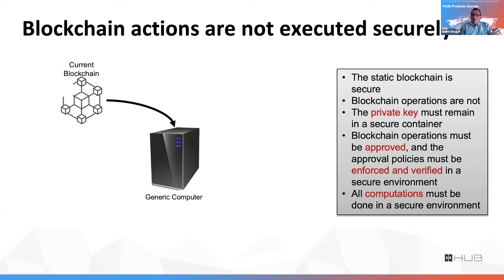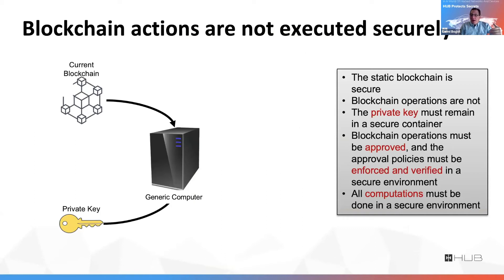Now, blockchain itself — this is one thing we need to point out — as a static piece of data is secure. There's no problem with the public blockchain and the security of a static blockchain. The issue is getting things onto the blockchain. Every time I do an operation, I need to add something to the blockchain, and in this case I need my private key, which is used to put things on the blockchain.